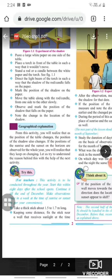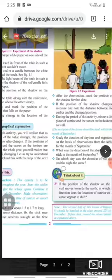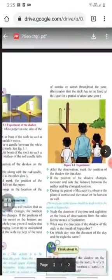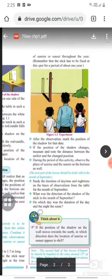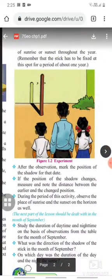Here's another activity which is for teachers. This activity is to be conducted throughout the year. Start this within eight days after the school opens. Continue it till the end of December. Make observations once a week at the time of sunrise or sunset as per your convenience. Take a thick stick about 1.5 to 1.7 meters long. Keeping some distance, fix the stick near a wall that receives sunlight at the time of sunrise or sunset throughout the year.